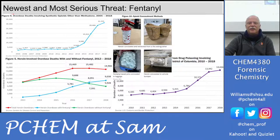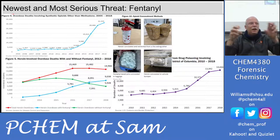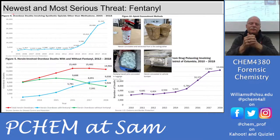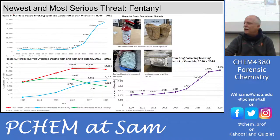Here are examples of fentanyl concealment methods: powder stuffed into the top of a fire extinguisher, a suitcase filled with bags of pills, and heroin concealed inside a vehicle bumper — the plastic bumper shell removed, impact foam pulled out, drugs inserted, and the bumper reassembled. Drug-detection dogs are a key tool for finding these hidden stashes.